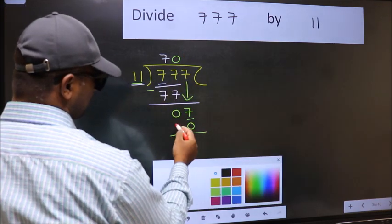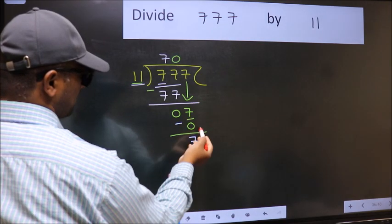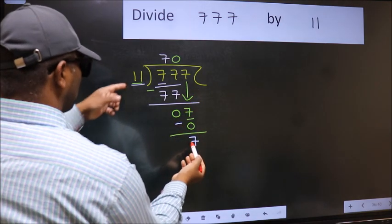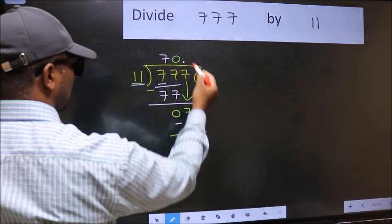Now we should subtract. 7 minus 0 is 7. Over here, we did not bring any number down. And 7 is smaller than 11.